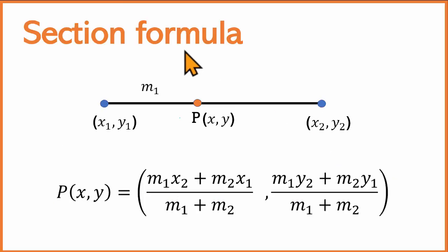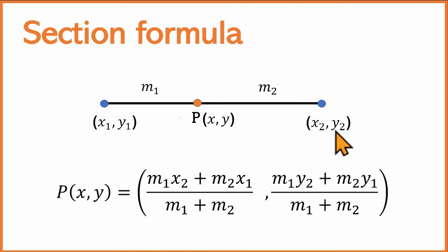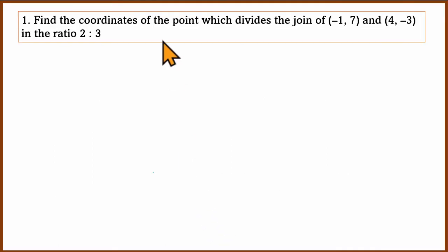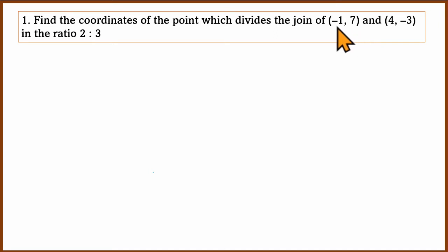We will use the section formula to solve these problems. The section formula divides a line in the ratio M1 to M2 using the coordinates. The first question is a straightforward formula substitution question: find the coordinates of the point which divides the line joining two points in the ratio 2:3.